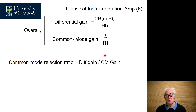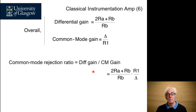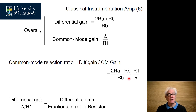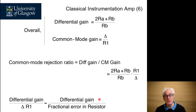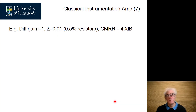Calculating out our common mode rejection ratio — which by definition is the differential gain divided by the common mode gain — we now have a CMRR that is much higher because of the differential gain of the input buffer amplifier. The overall performance of the instrumentation amplifier is equal to the differential gain divided by the fractional error in the resistors.